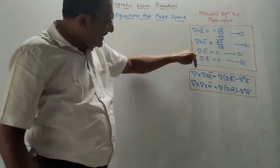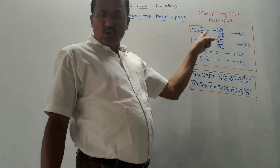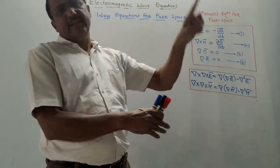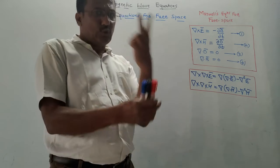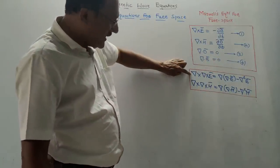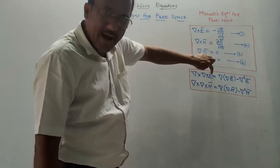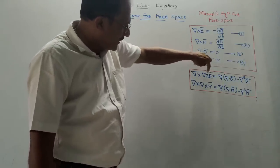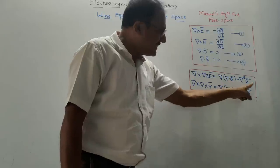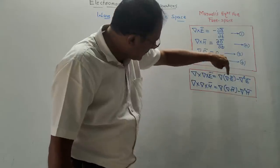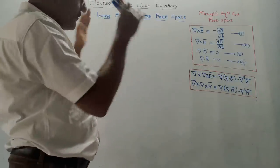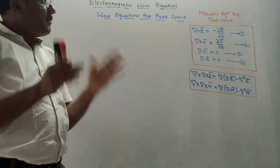We also need two vector identities. First, del × del × Ē. When you write del × of any vector, it indicates the curl operation. Del · of any vector represents the divergence operation. The vector identity we need is: del × del × Ē = del(del · Ē) − del²Ē. The same identity can be written in terms of H̄ by replacing Ē with H̄.